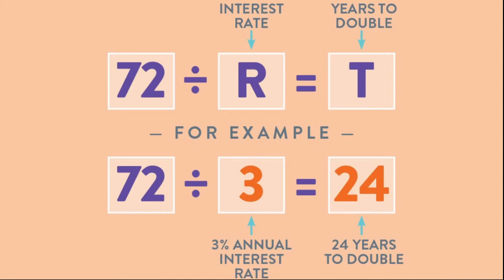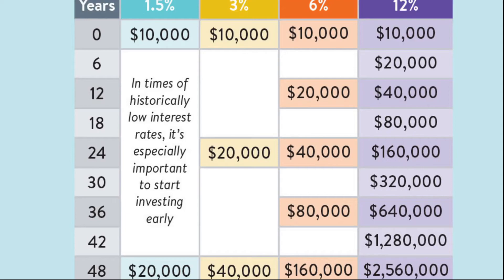For example, if the interest per quarter is 4% but interest is only compounded annually, then it would take 72 divided by 4 = 18 quarters, or 4.5 years, to double the principal. If the population of the U.S. increases at a rate of 1% per month, it will double in 72 months, or about 6 years.